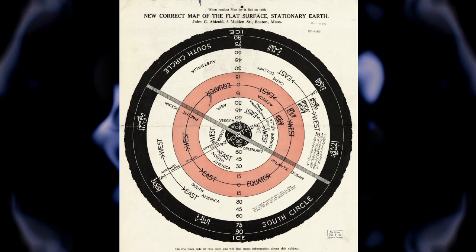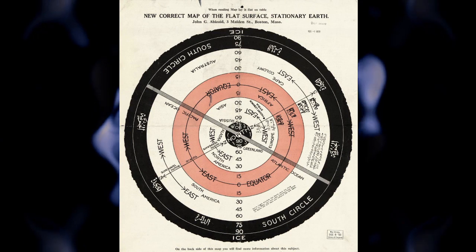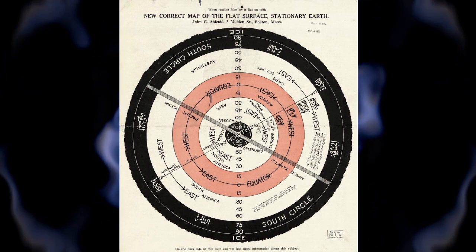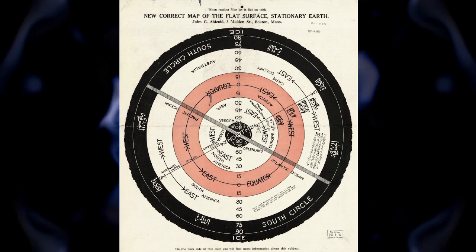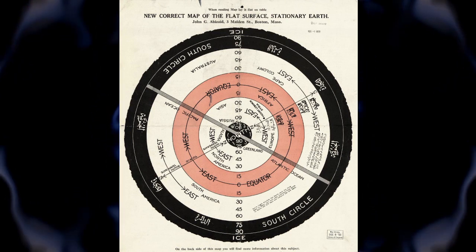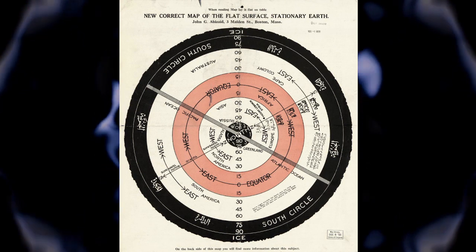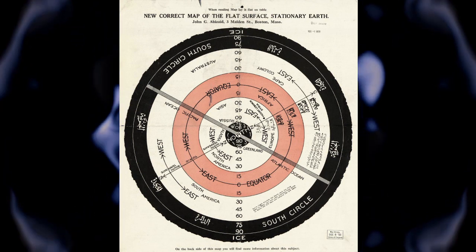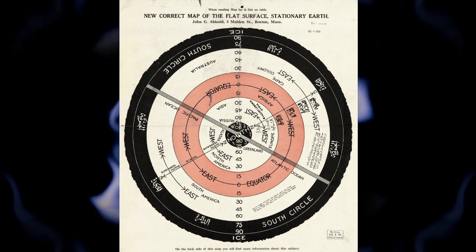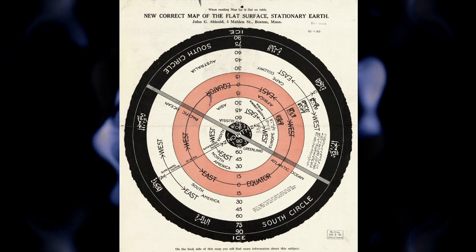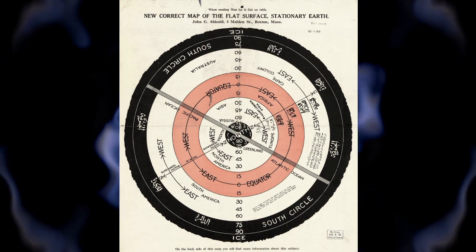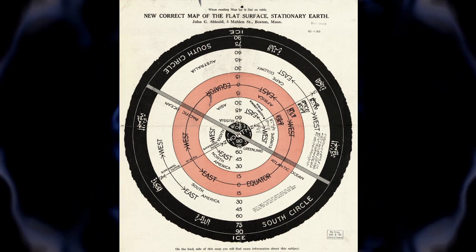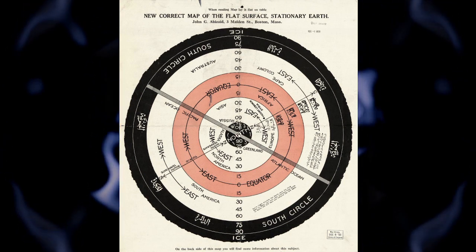This map was published or copyrighted in November of 1920 in Boston, Massachusetts, by Professor John G. Abizade. He titled this map "The New Correct Map of the Flat Surface Stationary Earth."